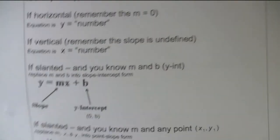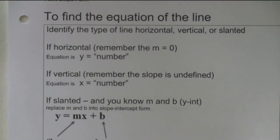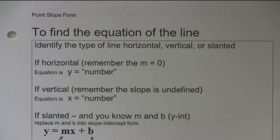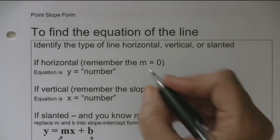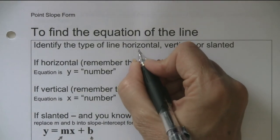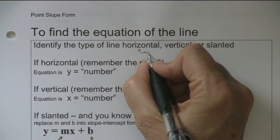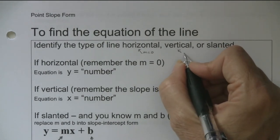This is also section 2.9. I've been making videos since 5:30 this morning and it's now late in the afternoon. A horizontal line has slope zero, and a vertical line has slope undefined.